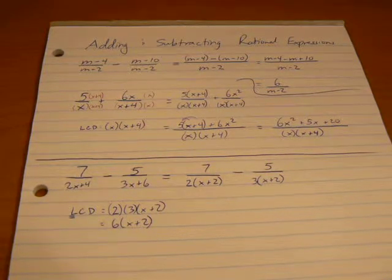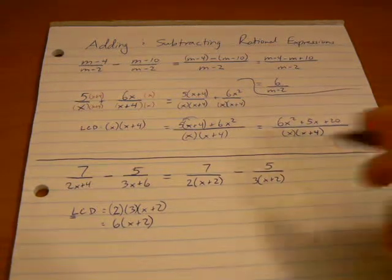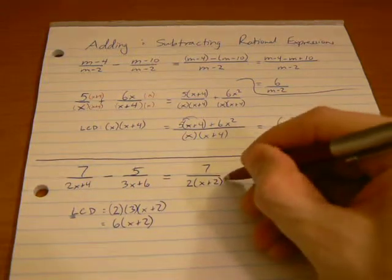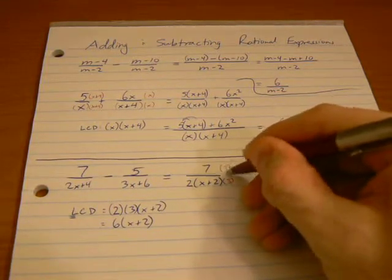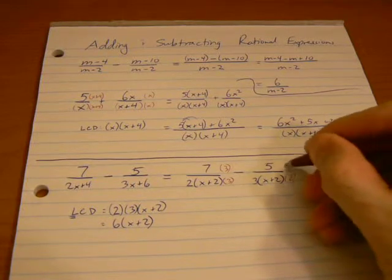So, now I've got a lowest common denominator that's a little easier to work with. In order to get this as a denominator of 6 times x plus 2, I'm going to multiply it by 3, top and bottom, and here by 2, top and bottom.